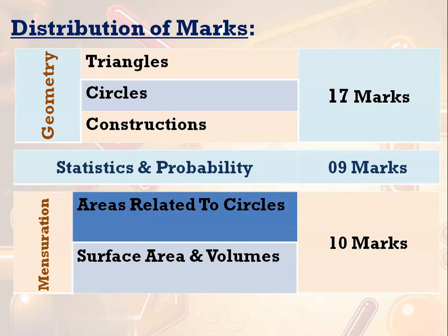The last branch is mensuration. There are 2 chapters in the branch of mensuration — areas related to circles, and surface area and volume. 10 marks is allotted for this branch. Generally 5 marks each, sometimes 6 marks for surface area and volume and 4 marks for areas related to circles, or sometimes 7 and 3. In total we will get 10 marks from this branch. So the 7 branches are: algebra, geometry, statistics and probability, mensuration, trigonometry, coordinate geometry, and number system.